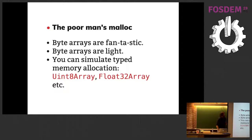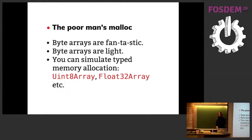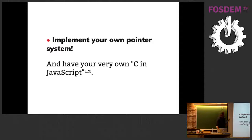Fourth and most interesting tip: the poor man's malloc. In C, malloc allocates a contiguous piece of memory. In JavaScript we recently got typed arrays — Uint8Array, Float32Array, and many other types — which let you allocate an array of N elements of a given numeric type. You can simulate a kind of memory allocation with that and be clever about it. The idea is that we can implement our own pointer system — your own C in JavaScript — which speeds things up and makes memory much lighter.